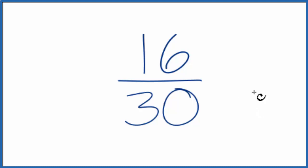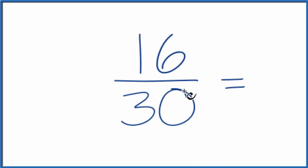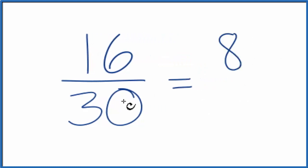So we need to find a common factor between 16 and 30. It might be easiest just to divide 16 by 2, that would give us 8, and 30 by 2, that would give us 15.